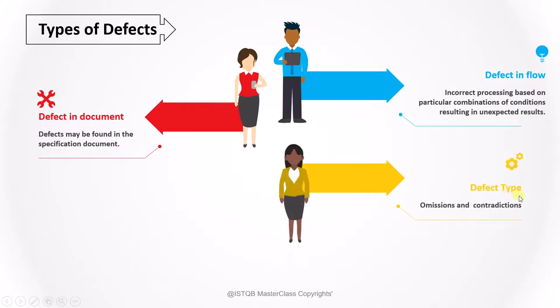The next one is defect type: omissions and contradictions. If one condition is telling something else and other condition is telling something else, then such type of defects you can find. If for some combinations, if you don't have any result, that also you can find. That is nothing but omissions.